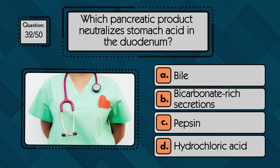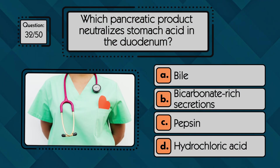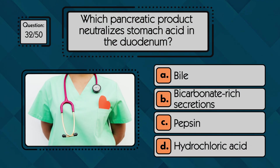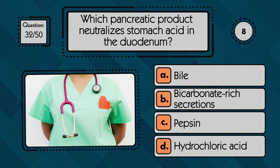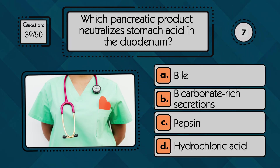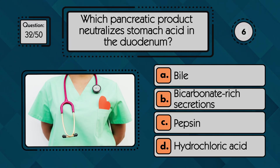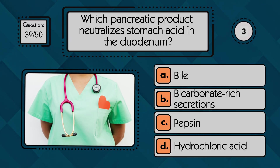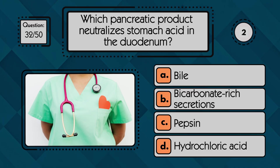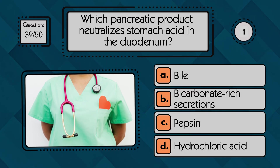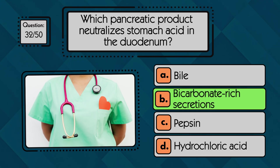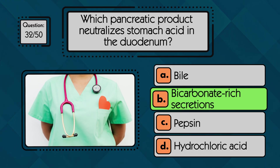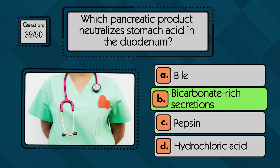Which pancreatic product neutralizes stomach acid in the duodenum? Bicarbonate-rich secretions perform this role.